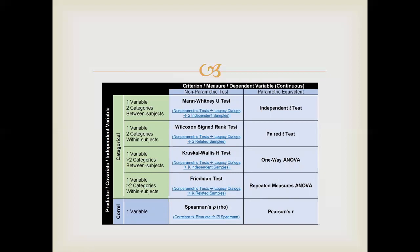Mann-Whitney U test is used for unpaired independent two-sample t-test. Wilcoxon signed rank test is used to compare medians — equivalent to the parametric ANOVA. Friedman test corresponds to the two-way ANOVA or repeated measures. Spearman rank correlation, also called Spearman Rho, is the non-parametric equivalent of Pearson correlation. Rho represents the correlation coefficient.